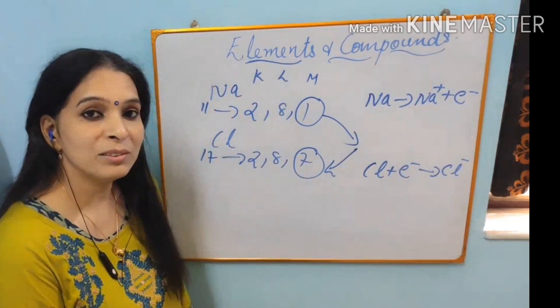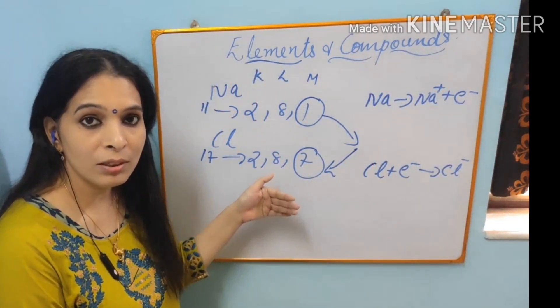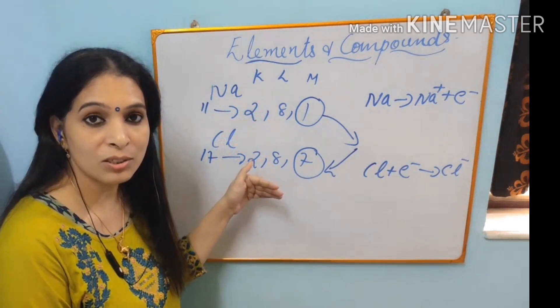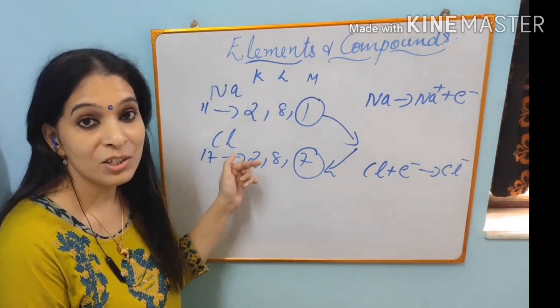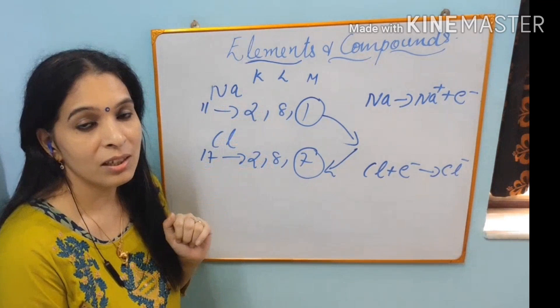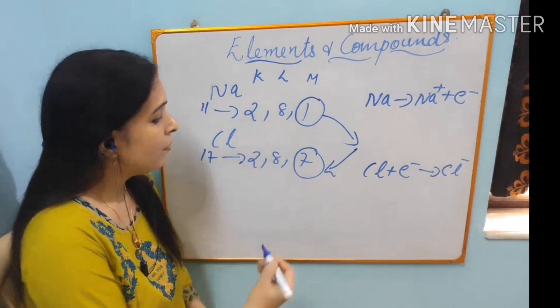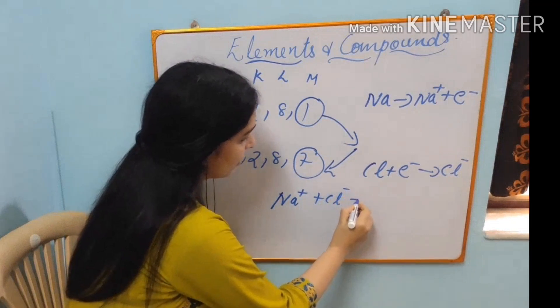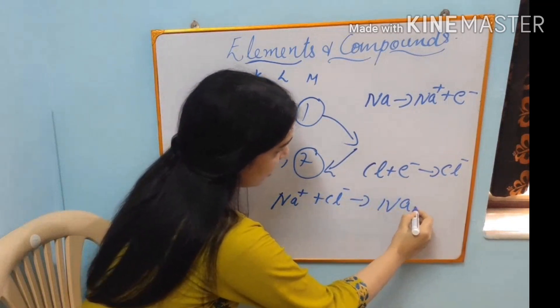Now what happened? They helped each other and both of their octets are completed. A friend in need is a friend indeed. When they helped each other, a beautiful bond formed between them and they formed NaCl.